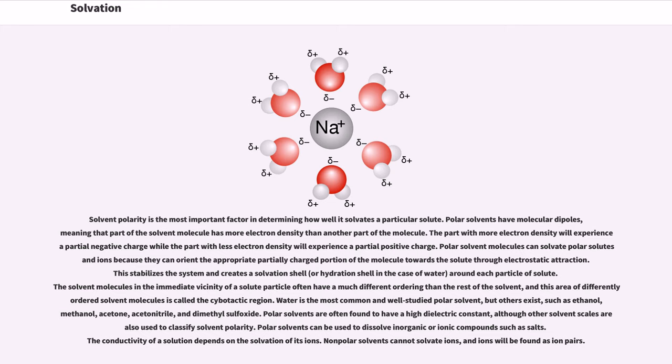Polar solvent molecules can solvate polar solutes and ions because they can orient the appropriate partially charged portion of the molecule towards the solute through electrostatic attraction. This stabilizes the system and creates a solvation shell around each particle of solute. The solvent molecules in the immediate vicinity of a solute particle often have a much different ordering than the rest of the solvent, and this area of differently ordered solvent molecules is called the cybotactic region.